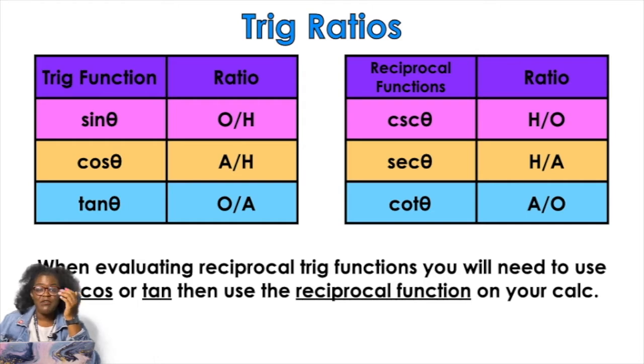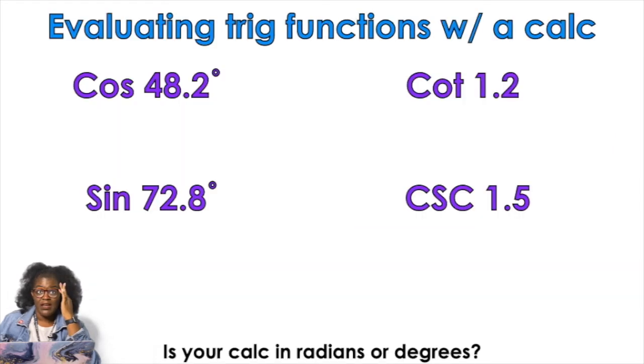Everybody's calculator is different. So the first thing when we're evaluating trig functions, you would either press cosine and put 48.2 in there, or you would press 48.2 and then press cosine. Either way, if your calculator is in the correct mode of degrees, you should get 0.6665. We like them to the fourth decimal place for whatever reason.